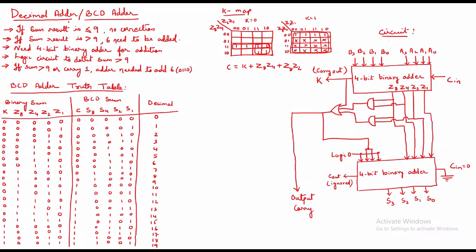In this video we are going to study about decimal adder, which is also called a BCD adder. The first point: if the sum result is less than or equal to 9, no correction is required. If the sum result is greater than 9, 6 needs to be added. Since this is a BCD adder, we have four bits for each BCD number, so we need a four-bit binary adder for addition.